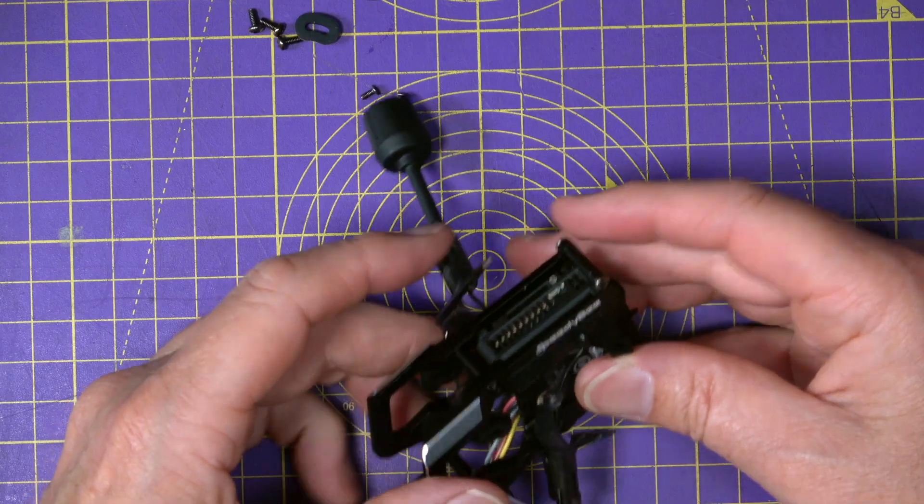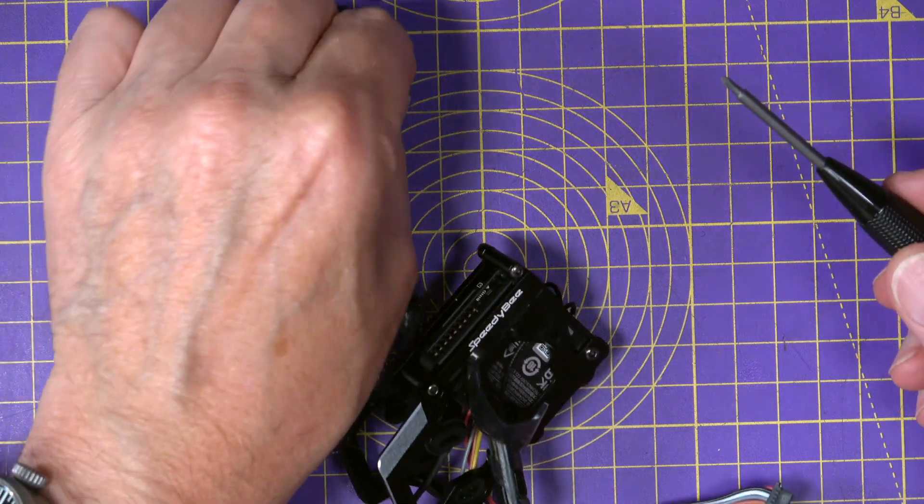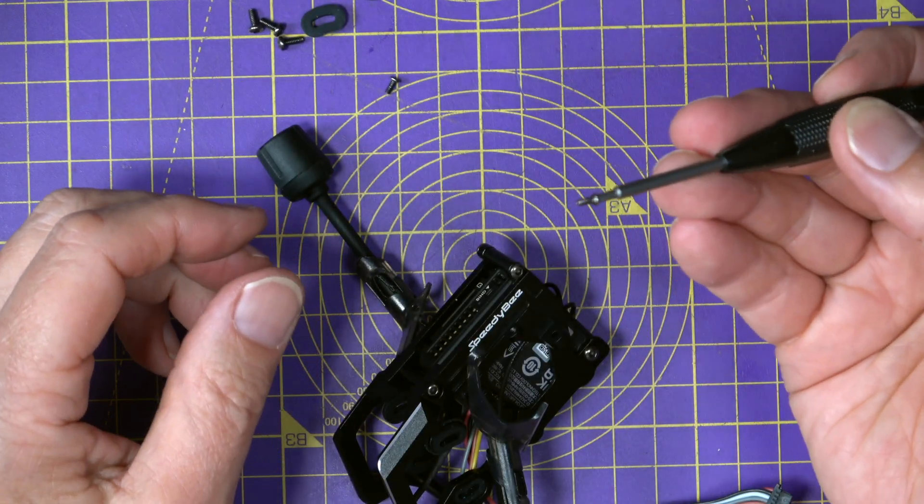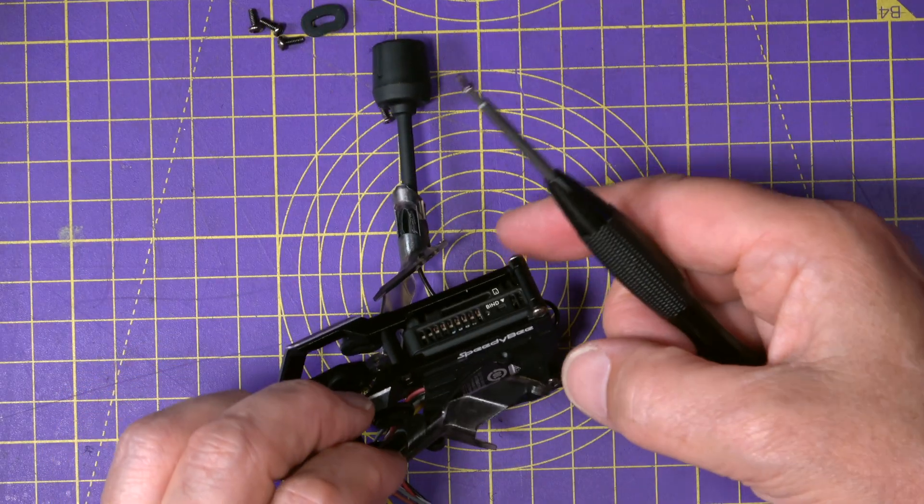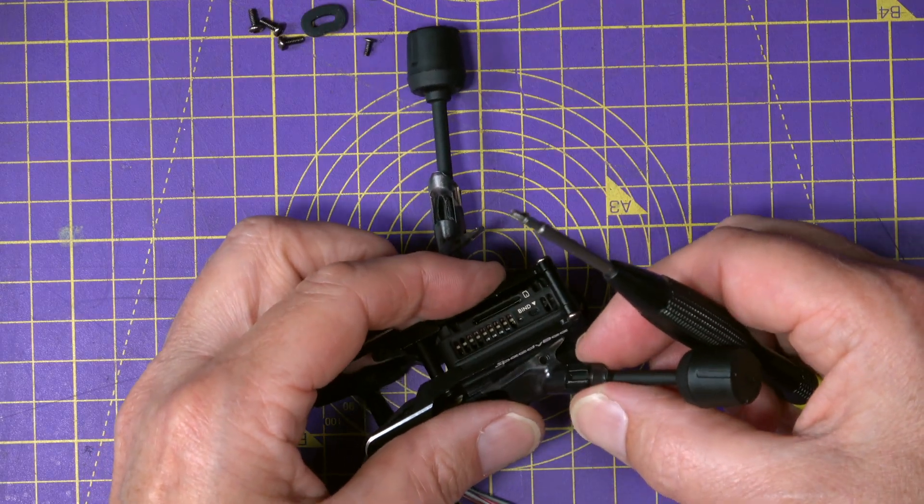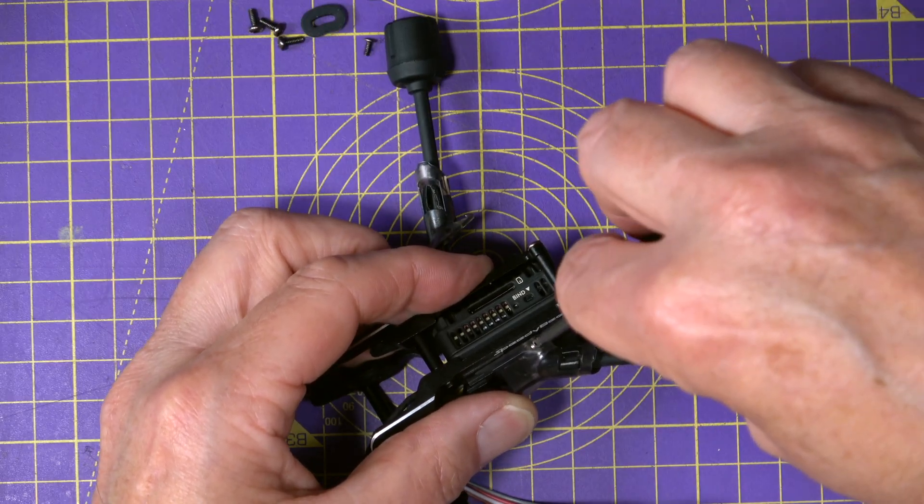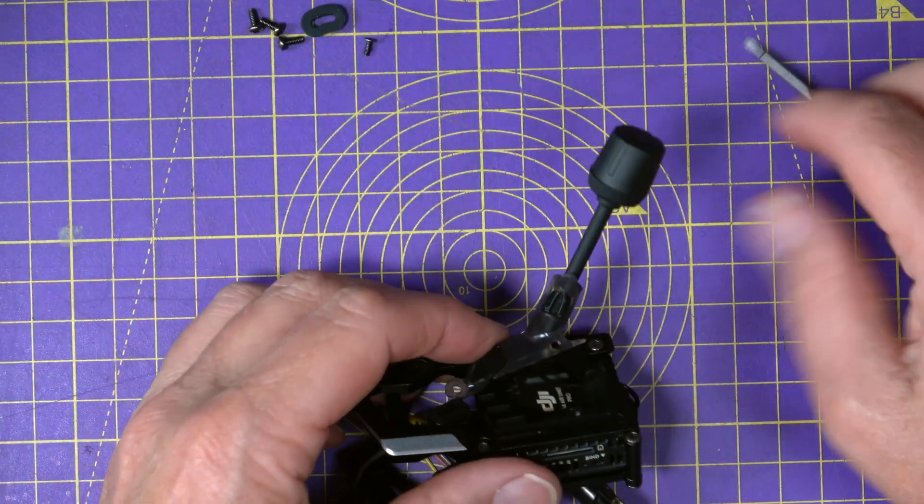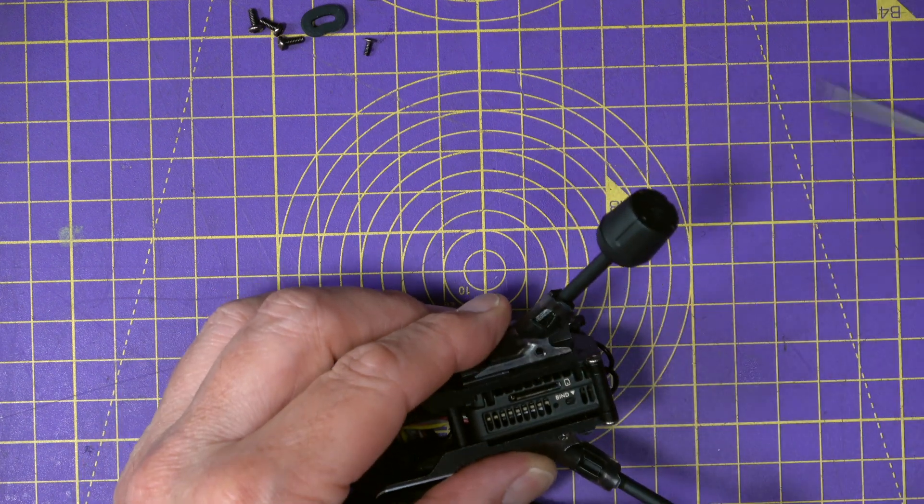And now we can fix the antennas in place. And for that, you will need these teeny weeny... I don't know what they are. But they're flat head, cross head, flat cross head screws. And these go... Get that the right way up. Just in there. Like that. This one comes up this side. Like that. You can see that's the hole where they're going to go. Oh, very neat.